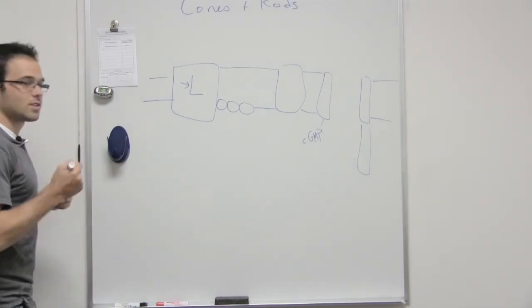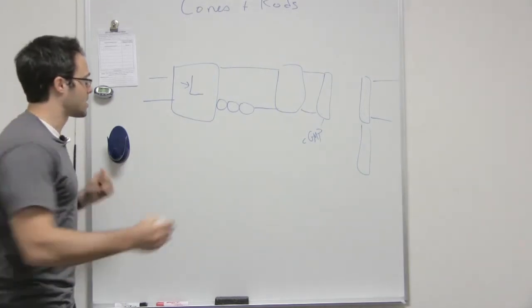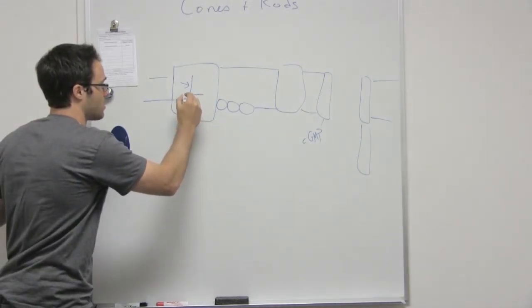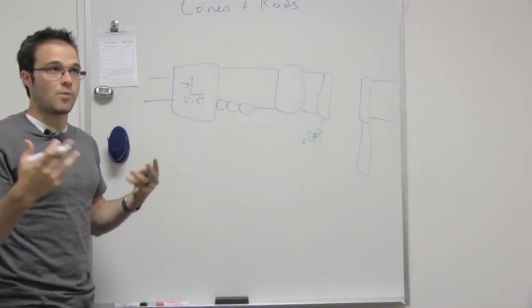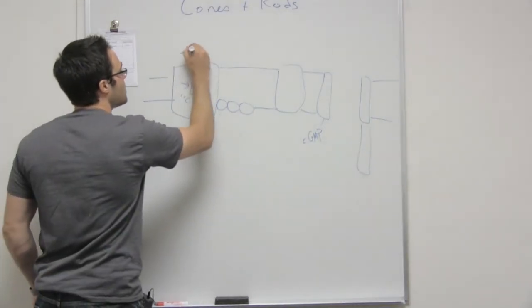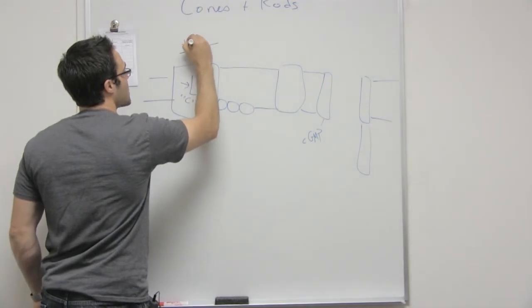Okay, yeah, so basically it starts in the cis form, cis bond, and then when light hits it, it causes a chemical change, so then it becomes straight, and this is trans.